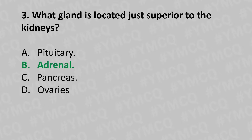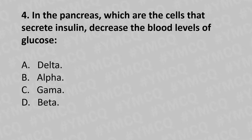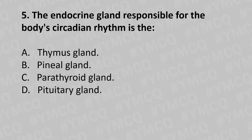Moving to our fourth question. In the pancreas, which are the cells that secrete insulin and decrease the blood level of glucose? Option A: delta. Option B: alpha. Option C: gamma. Option D: beta. And the answer is Option D: beta.